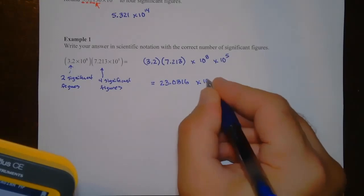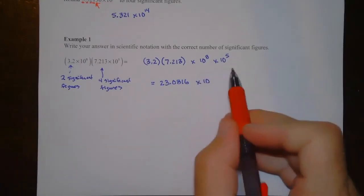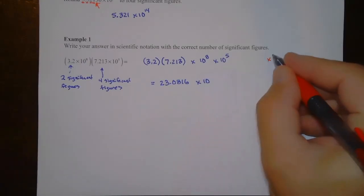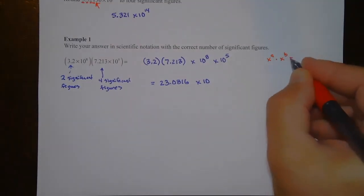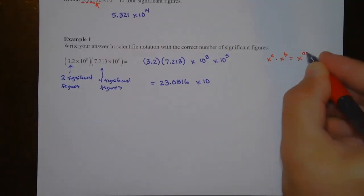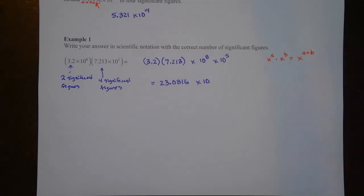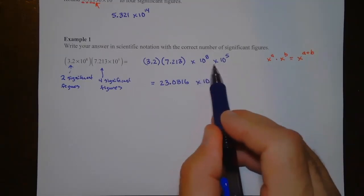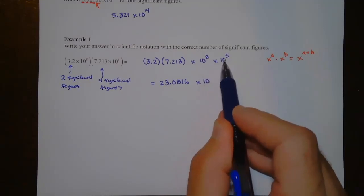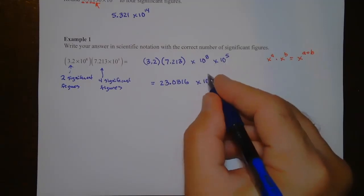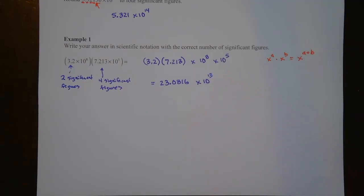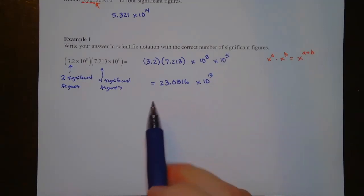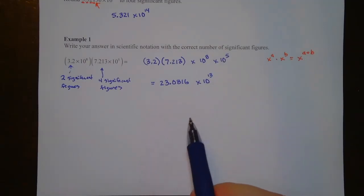So the result is 23.0816 times 10 to the 13th. We use the exponent rule: x to the a times x to the b equals x to the a plus b. Since both bases are 10, 10 to the 8th times 10 to the 5th becomes 10 to the 13th.